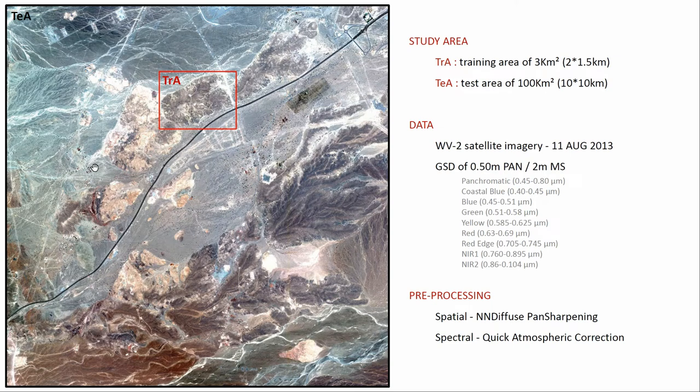The area is characterized by a series of mountain ridges that deliver a Wadi — a dry riverbed. On the north, there is an alluvial bank, while at the south I used 3 square kilometers as a training area where I trained the rule set, using eCognition to do everything, and 100 square kilometers as a test area. The data are WorldView-2 satellite images with a resolution of 0.5 meters for the panchromatic band and about 2 meters for the 8-band multispectral. Preprocessing was limited to pan-sharpening and a quick atmospheric correction.